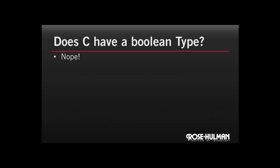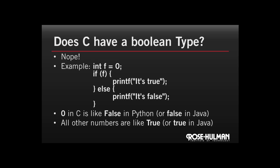Another question that comes up is whether C has a Boolean type. And in fact, it doesn't. Instead, C being sort of an old school language, unlike the relatively newer Python or Java, C uses integers to represent Booleans. And so here's some example code. I set the integer f to 0 and then do an if statement. And I can actually use an integer as the condition here. And so in C, 0 is like false in Python or Java. So in this code, since we set f to 0, the condition would be false and we'd print out it's false. All other numbers besides 0 are treated as true in C.